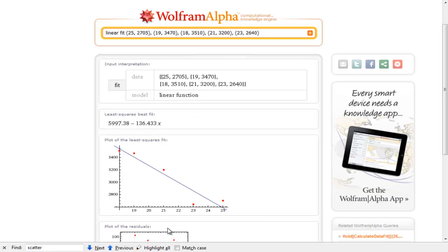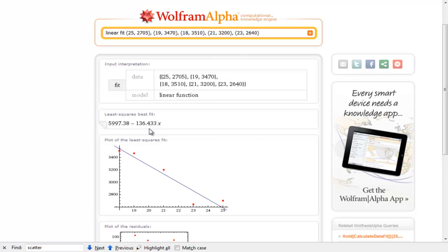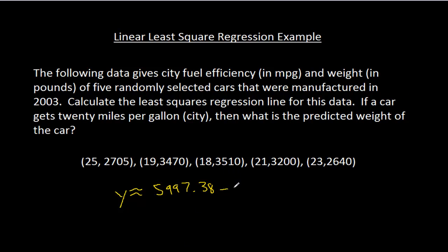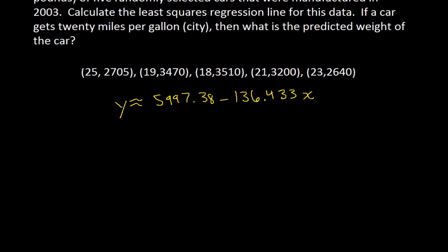So we got 5997.38. Let me copy that down. So that's y is about 5997.38 and then a negative slope of 136.433x. There's my least squares regression line.